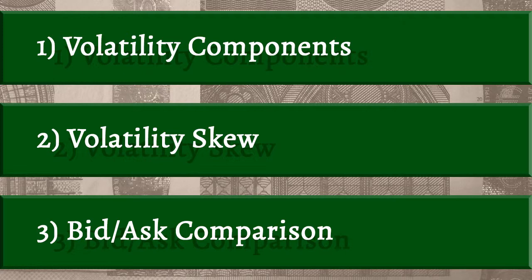And three: one way to think about the bid and ask prices is to consider the bid as the wholesale price and the ask as the retail price. Market makers can make their money either on the spread itself or on the volume that occurs from high liquidity, like with SPY.